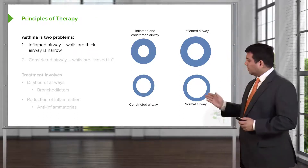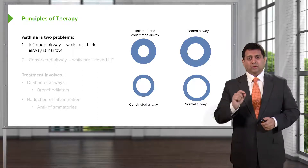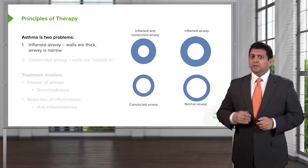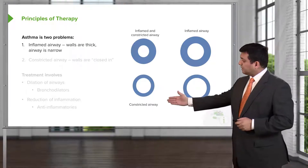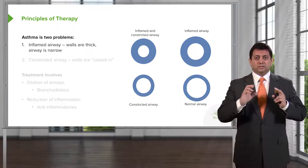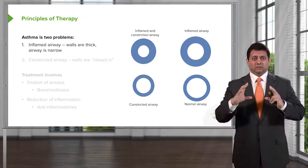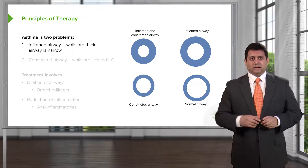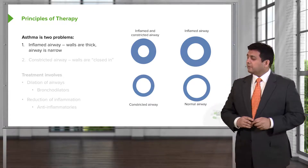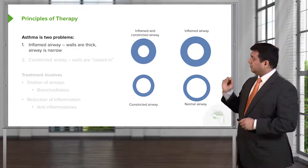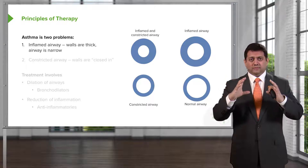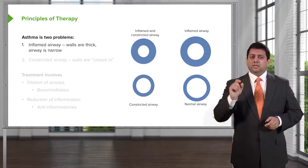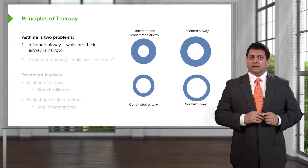When you take a look at a normal airway, you can see that the walls are not thick, and the airway is wide and open. When you take a look at a constricted airway, you can see that the walls are still the same thickness, but the entire diameter of the airway has narrowed, resulting in a narrower lumen. When you take a look at an inflamed airway, even though the walls have not constricted in, the walls themselves are thicker, so you end up with a narrower airway.